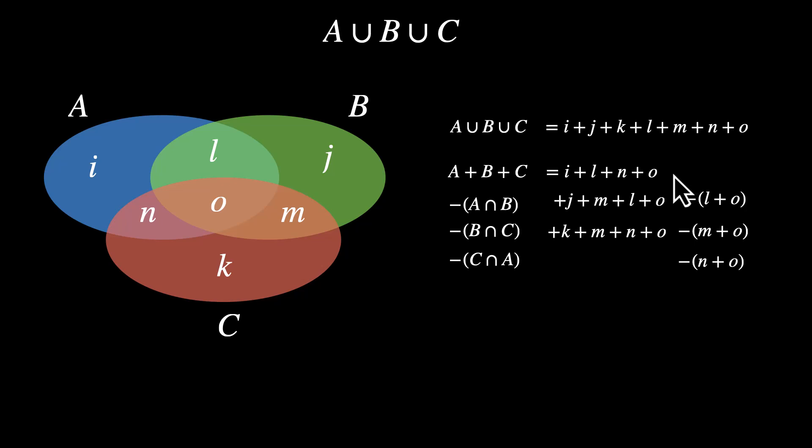We started with three O's, but we also subtracted three O's. So we're down to zero O's, which means we have to add back this central region. So let's do that. Let's add A intersection B intersection C, which means we add O. Now this right hand side is exactly equal to what we need. I to O, all of them appearing only once, which means this should give us the formula for A union B union C.